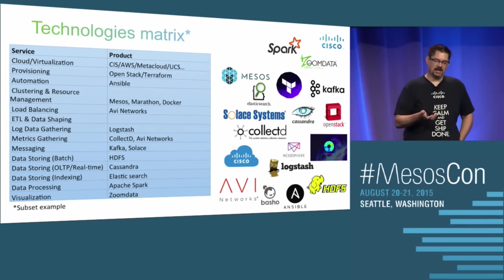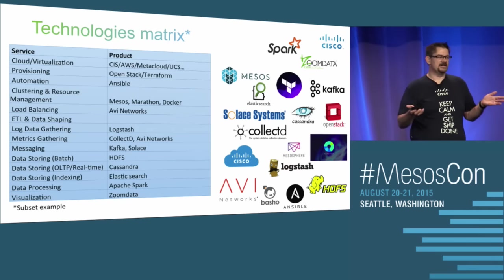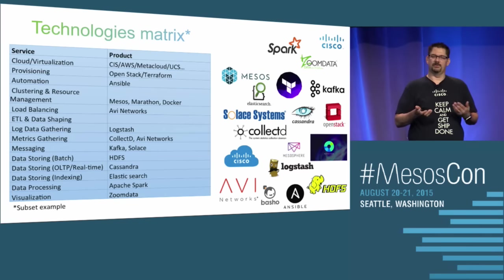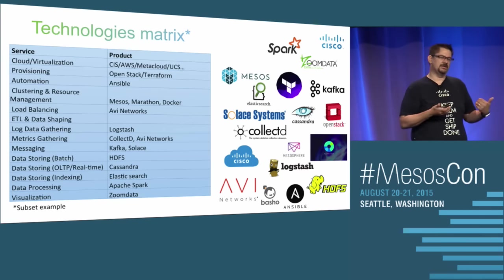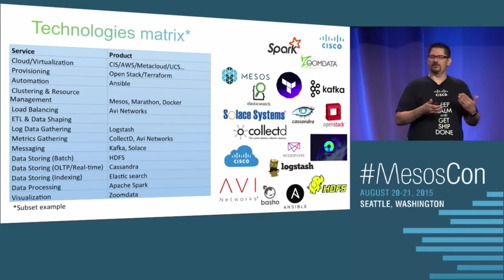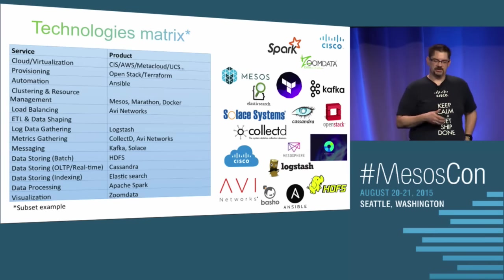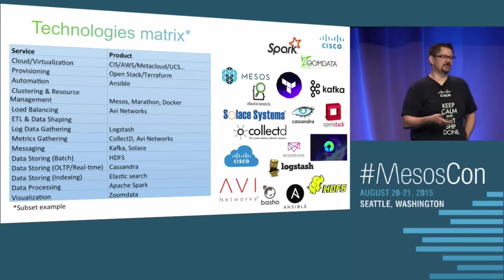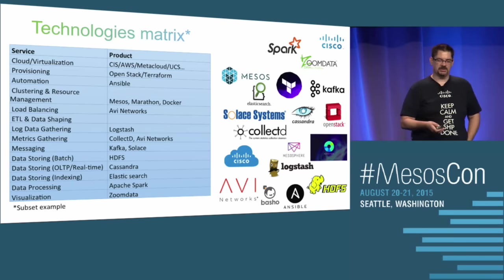Just a couple quick slides on the problem space we're in. There are a lot of different types of services you need when developing. You have to think about how you're going to integrate your entire development cycle together and figure out which service architectures you're going to use. There are many different examples, and this isn't even a complete set — it's a very small subset of the options and choices you have.